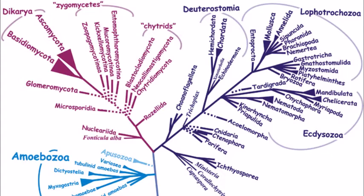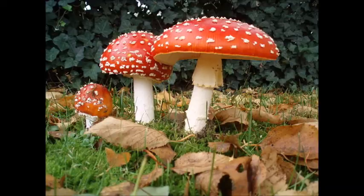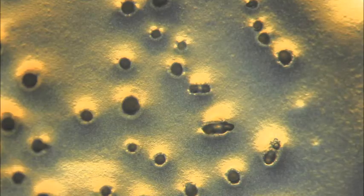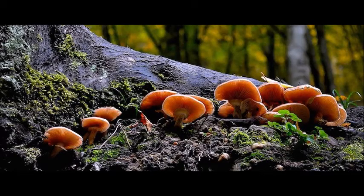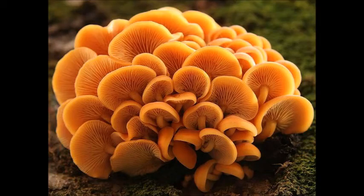The remaining opisthokonts comprise the clade Nucleomycea, which includes Nuclearidae, Fonticulida, and Fungi. Nuclearidae and Fonticulidae are amoeba-like protists mostly found in freshwater and soil, and fungi are multicellular heterotrophs with chitin in their cell walls. Fungi can be micro- or macroscopic and come in an assortment of shapes, and they are definitely not plants. Fungi don't have chloroplasts or cellulose, and they don't make their own food.